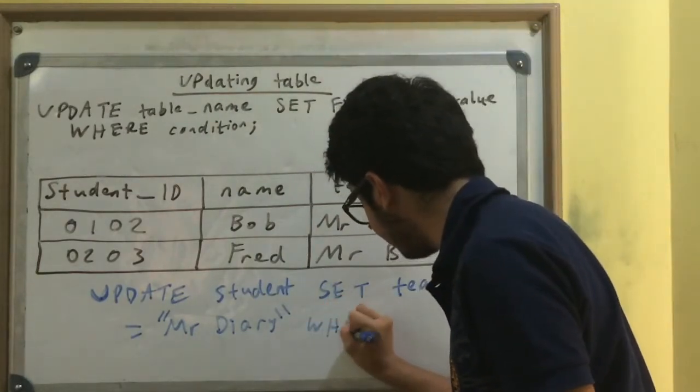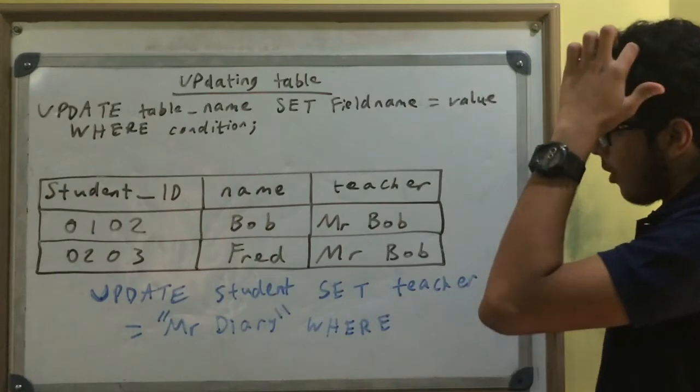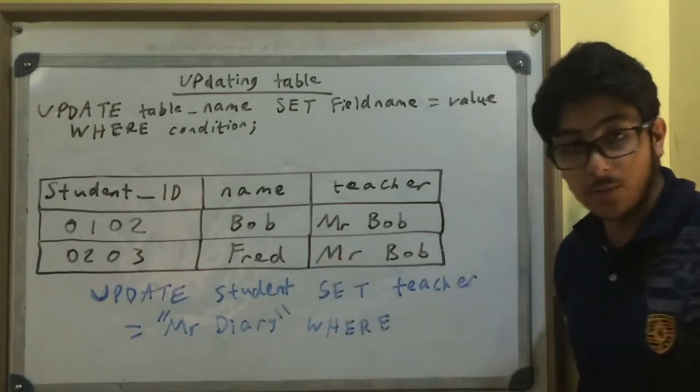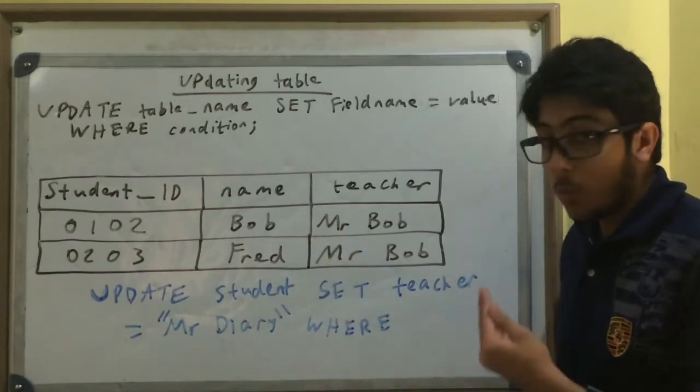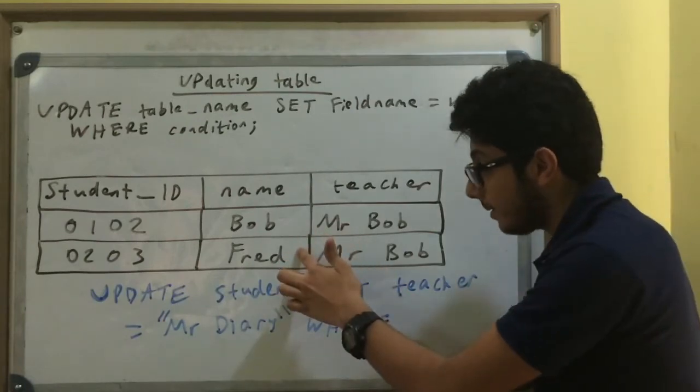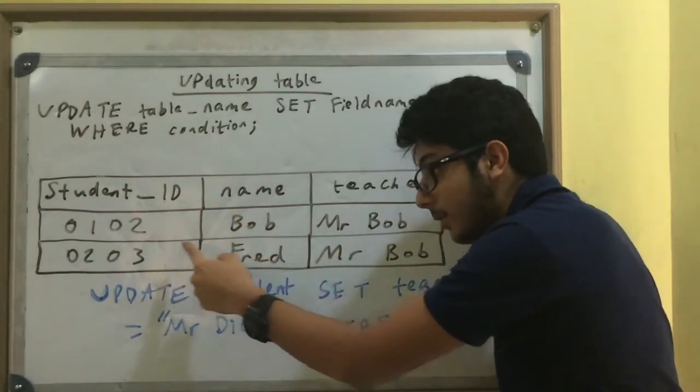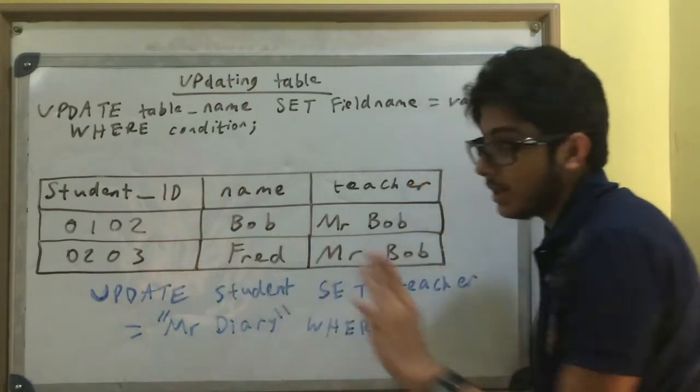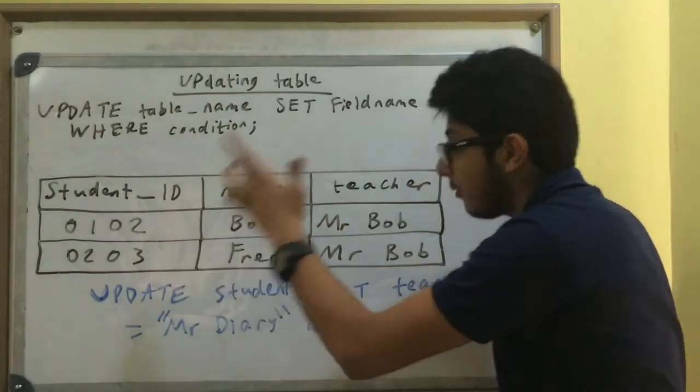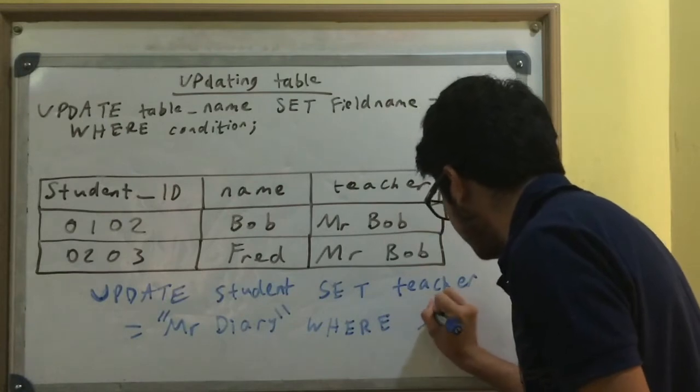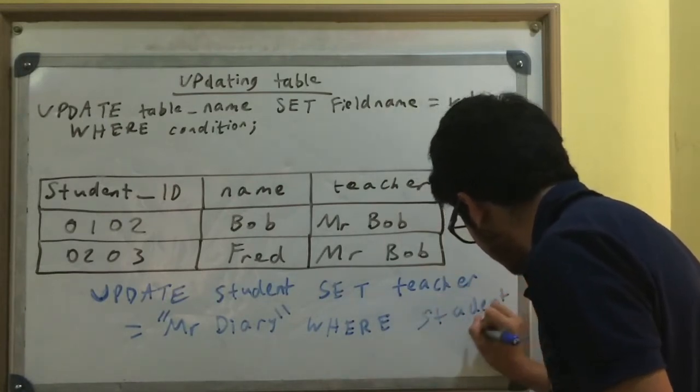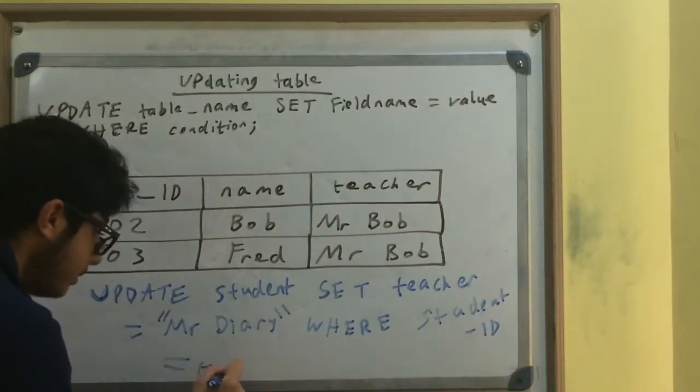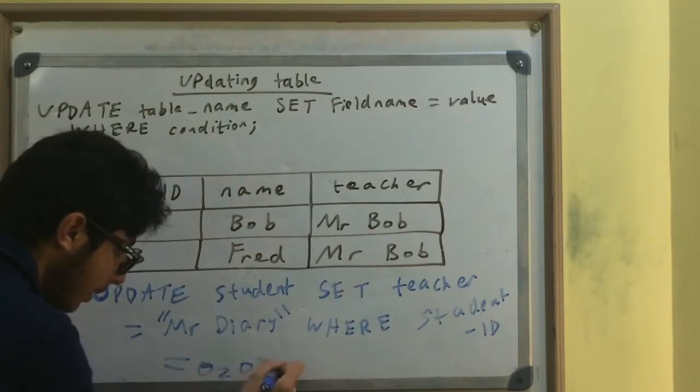WHERE - now here is our condition. Now there could be a million students, there could be more than one student named Fred in my school. So what can we use that is unique to Fred? The primary key, his student_ID. There may be more than one student named Fred, but there is not more than one student with the same student_ID because it's a primary key. So we're going to use a primary key for this condition. WHERE student_ID is equal to 0203, semicolon to end the statement.